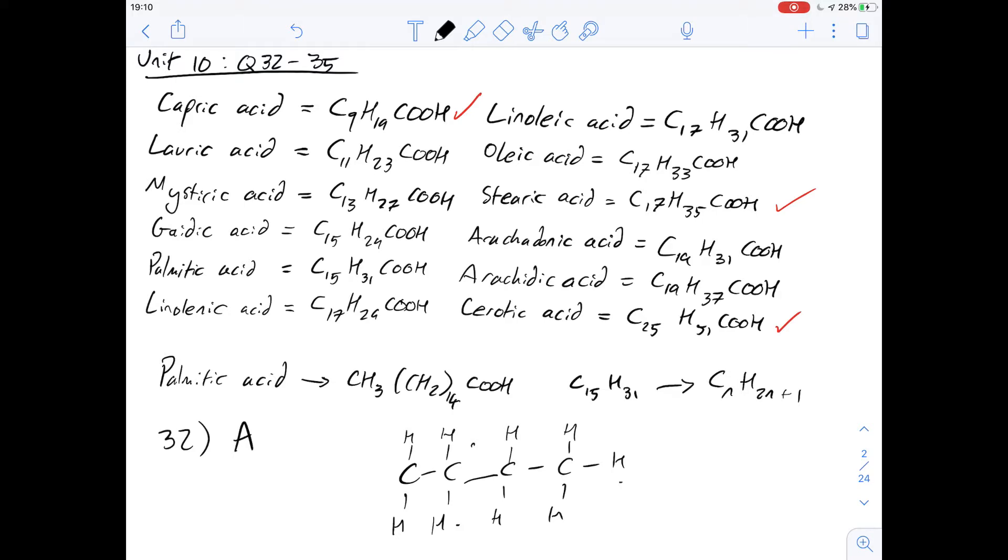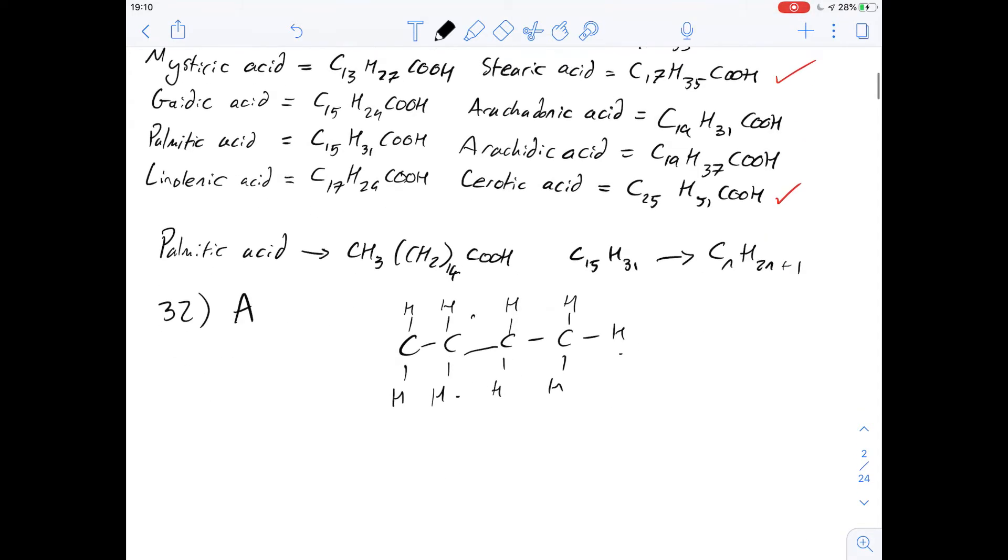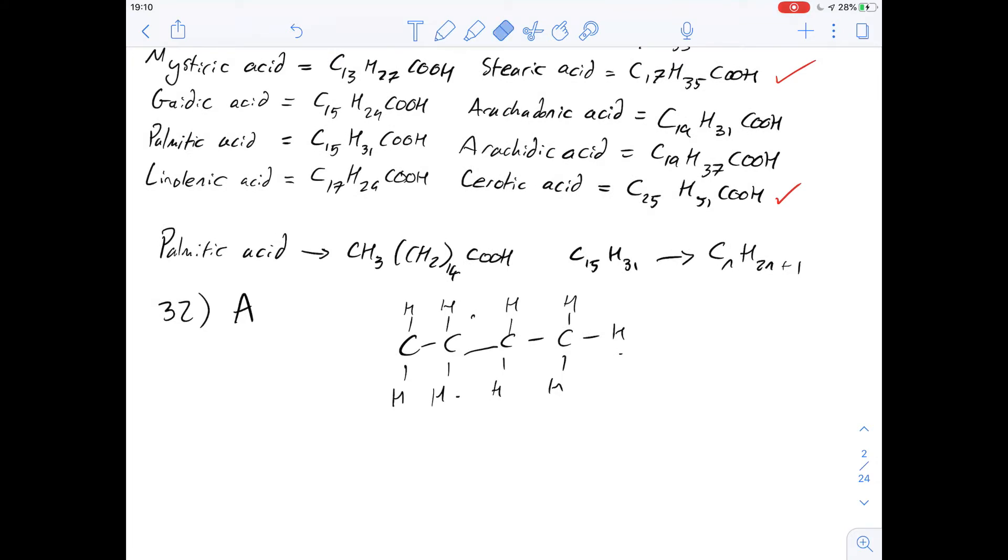Question 33 says the number of double bonds in arachidonic acid is what? Okay, so we've worked out that general formula for saturated fatty acids, but if it's unsaturated it means it has one of these carbon-carbon double bonds. So if we add in one of these carbon bonds, what happens?